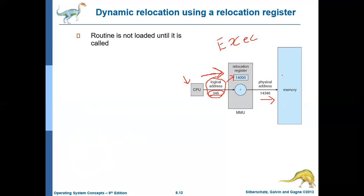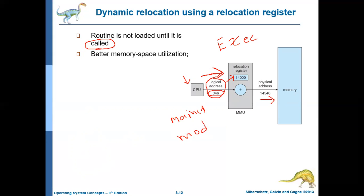If you are using runtime binding, a particular routine will not be loaded until it is called. What does this mean? Assume your program contains many modules — a main module from where execution starts, module one, module two, and so on up to module N.